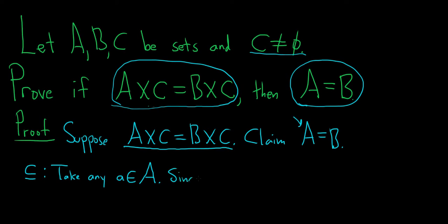Since C is non-empty, there exists little c in C. This means that the element little a comma little c is an element in A cross C, which equals B cross C.